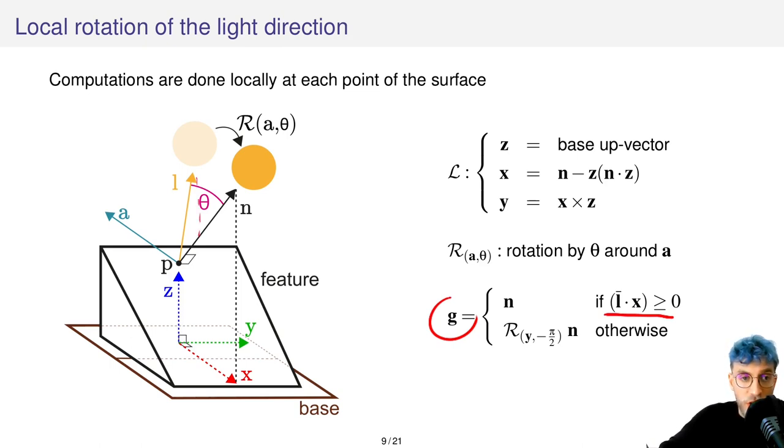L bar is the projection of the light onto the base, renormalized so it looks a little bit like this, and we check the sign of the dot product between this projected light and x. If it's positive, it means that we are in this area here. If it's negative, it means that the light is coming from the other side of the feature.